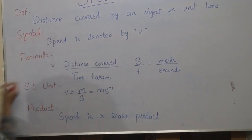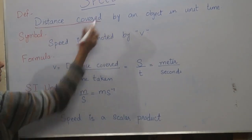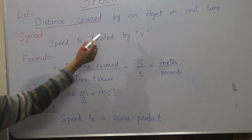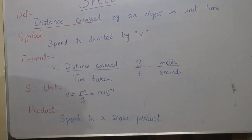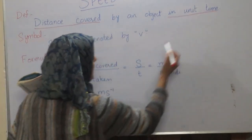Formula, as we see in this definition, speed is the distance covered by an object in unit time.